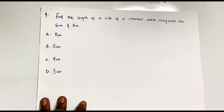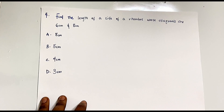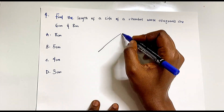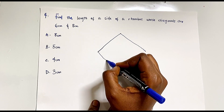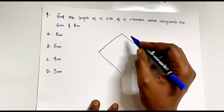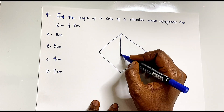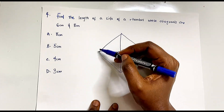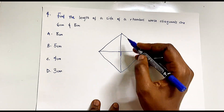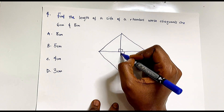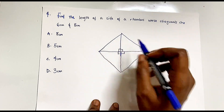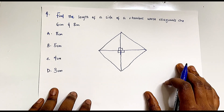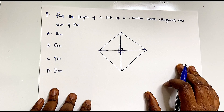Question four says: find the length of a side of a rhombus whose diagonals are 6 centimeters and 8 centimeters. The diagonals of a rhombus are perpendicular to each other, which means each diagonal is bisected at right angles. This makes one side of the rhombus the hypotenuse of a right-angle triangle, so we can use Pythagoras' theorem.